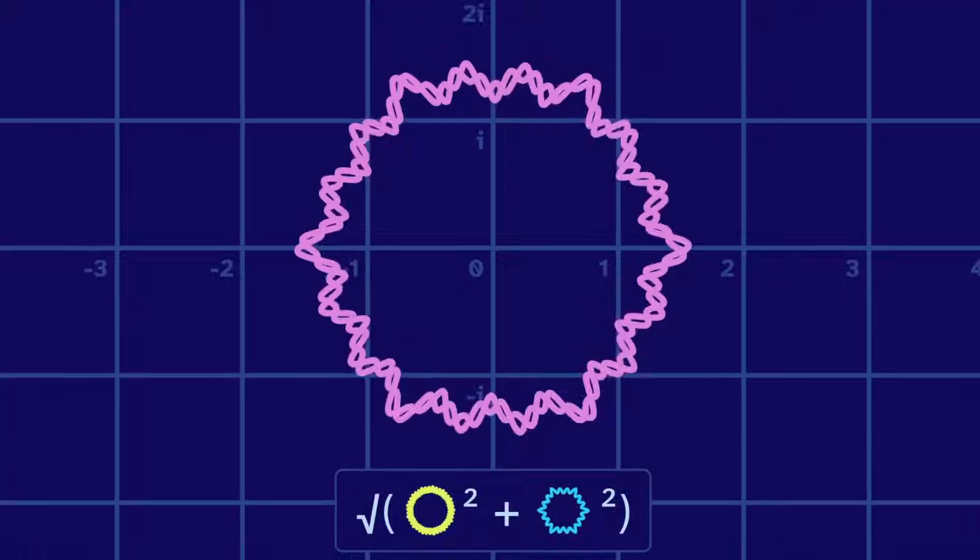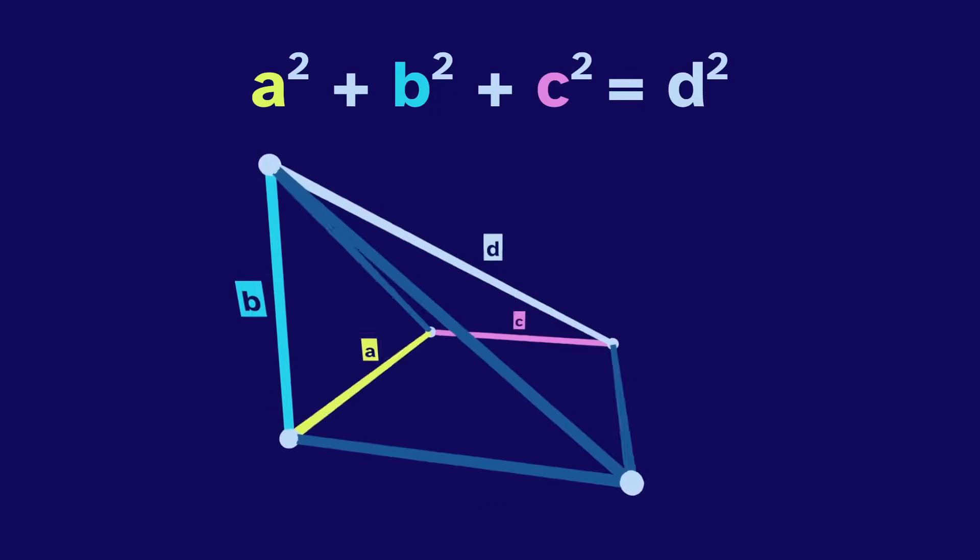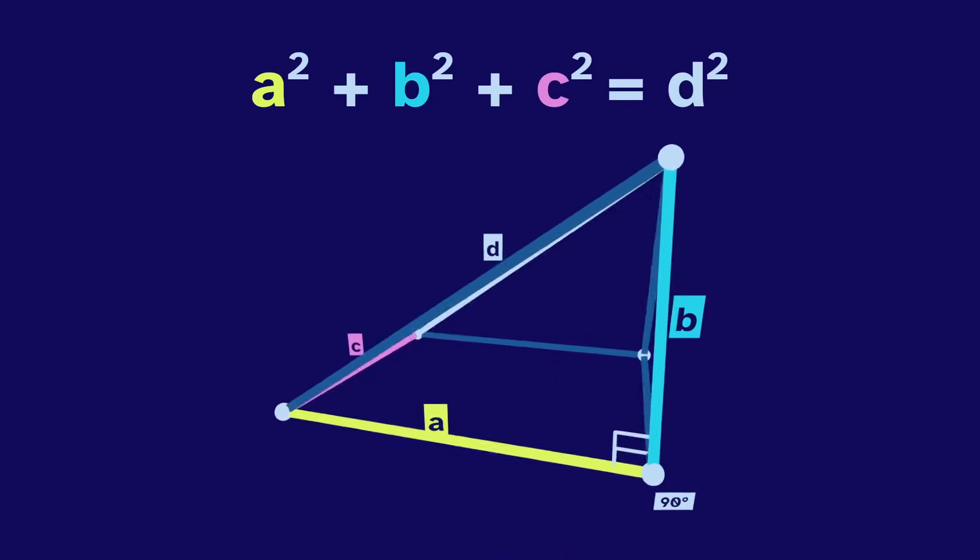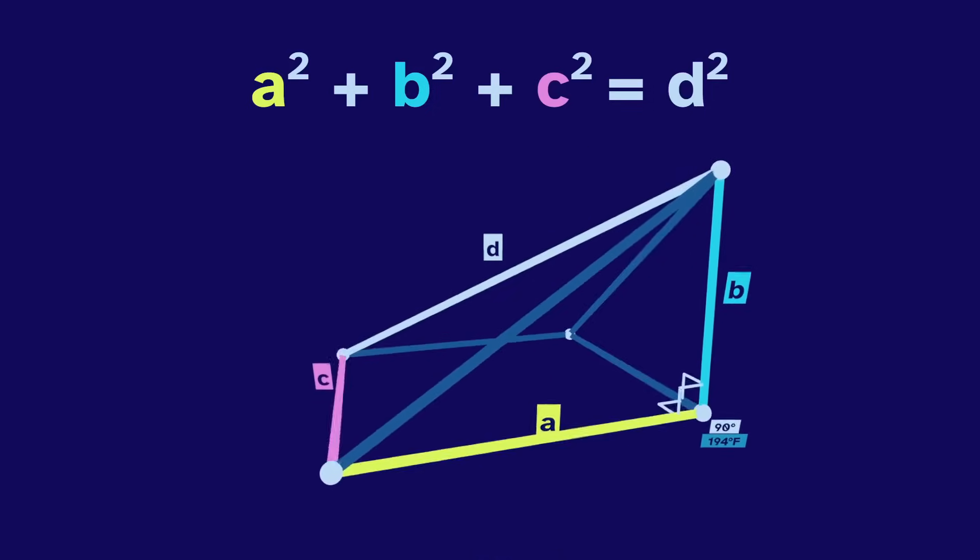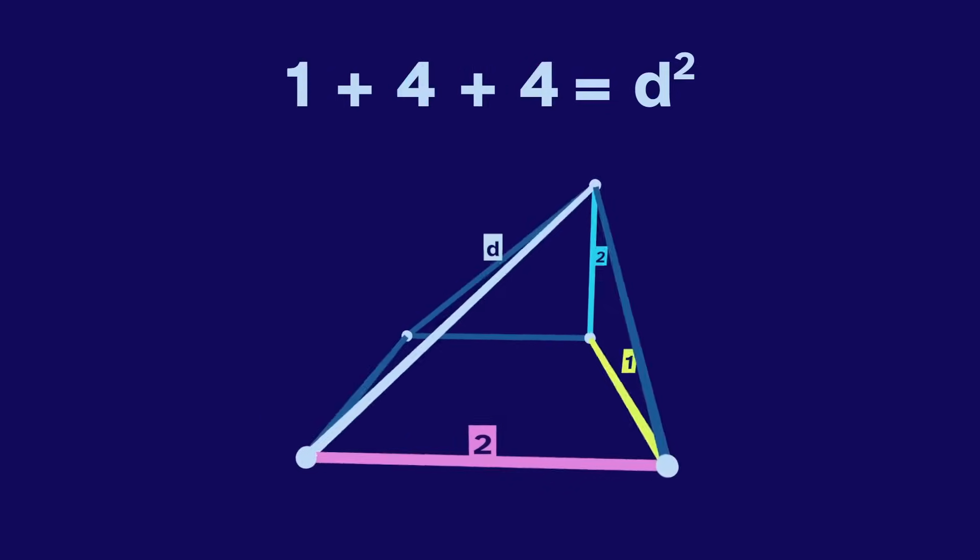And here is another example of this. The three-dimensional Pythag theorem describes the relationship between sides of a right pyramid, meaning that these three angles are all 90 degrees, or 194 Fahrenheit. So if the sides are 1, 2, and 2, then the diagonal will be 3.